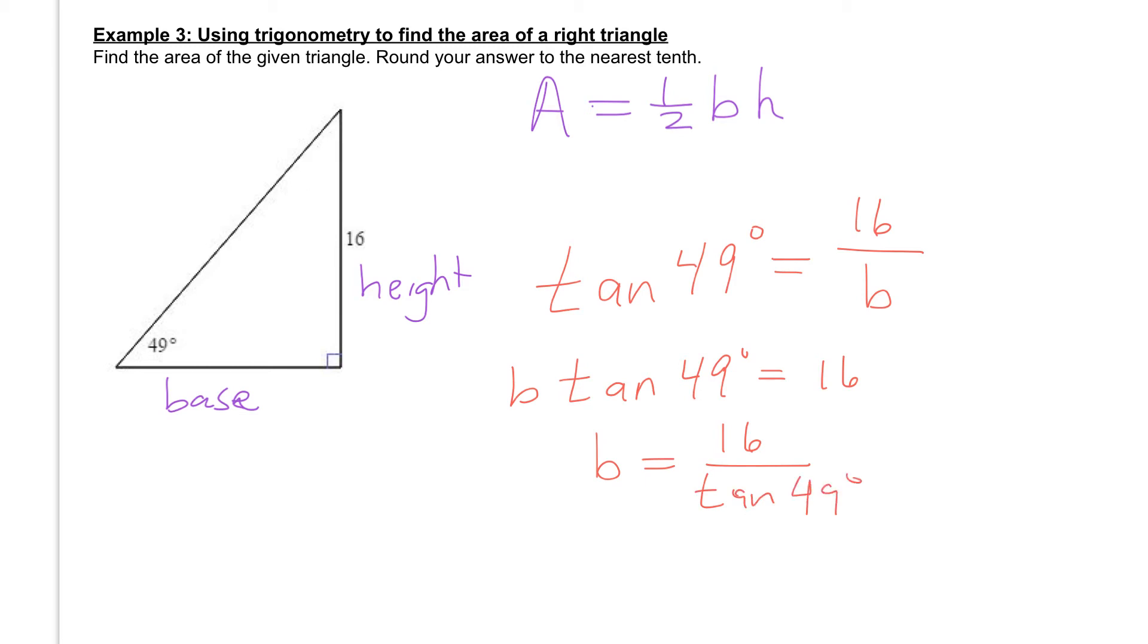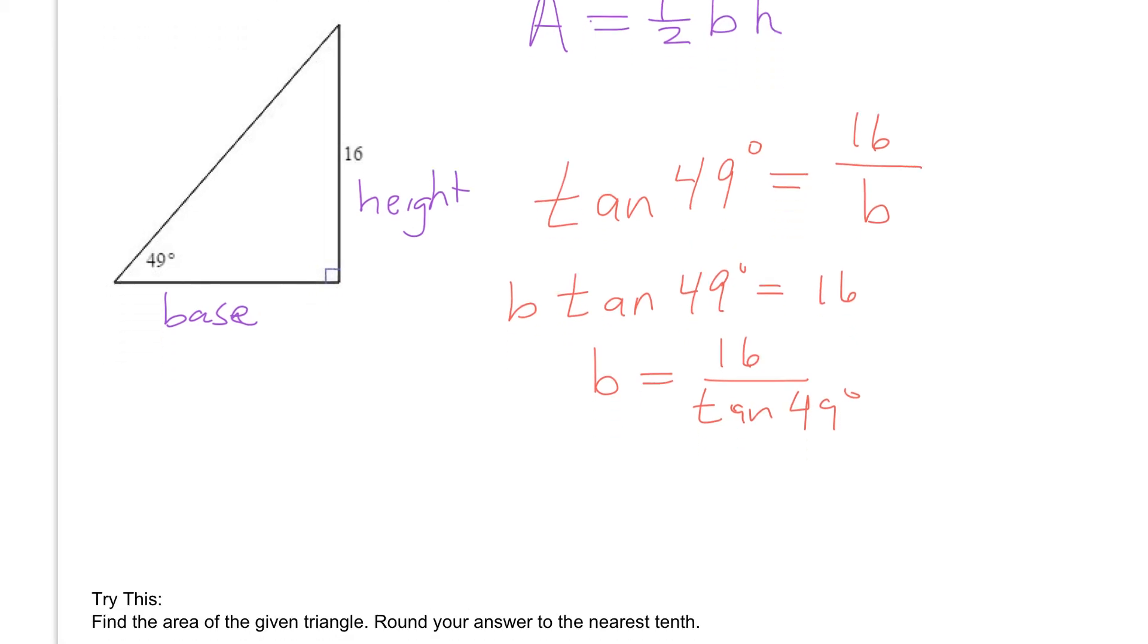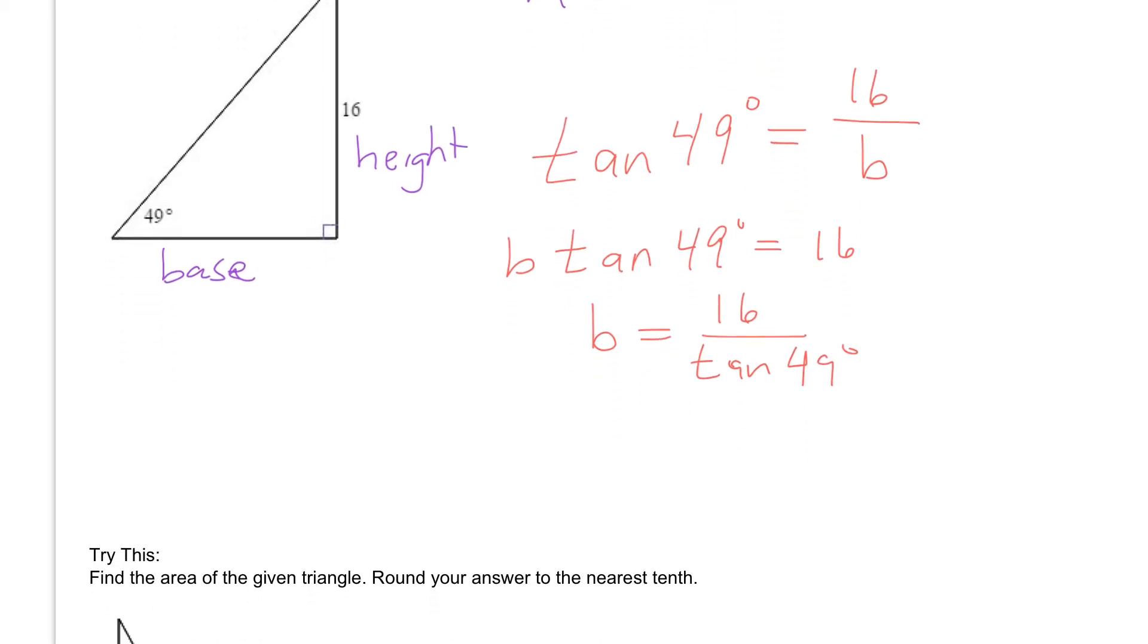And then from there, we can go ahead and plug that into our area formula. So we can say that the area is equal to 1/2 times the base, which is 16 over the tangent of 49 degrees, times the height, which is 16.